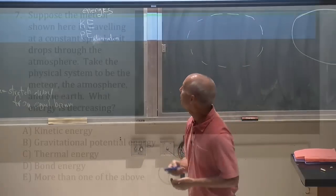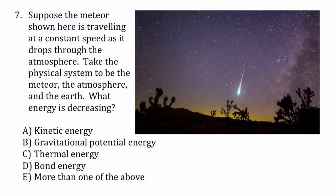Meteor, atmosphere, and earth. As this thing falls through the atmosphere, suppose it's traveling at a constant speed. When it's as far down as that, it's close to a constant speed, may well be almost exactly constant as it falls through the atmosphere. What energy is decreasing?